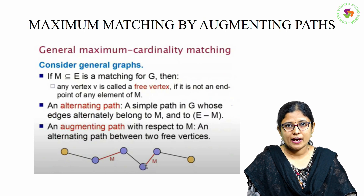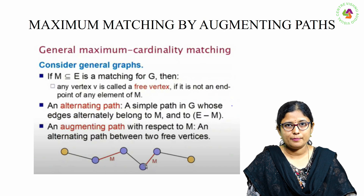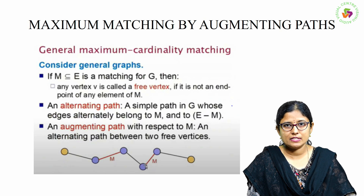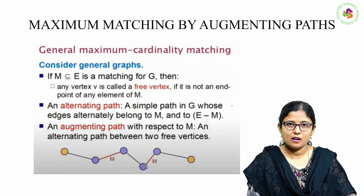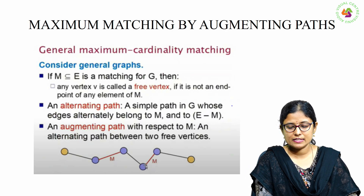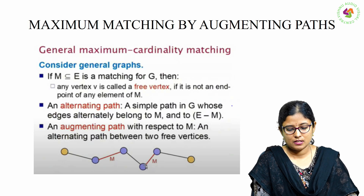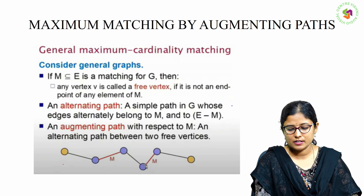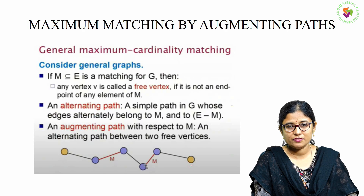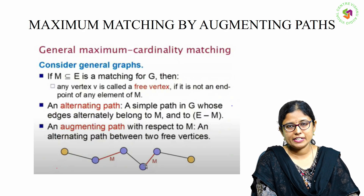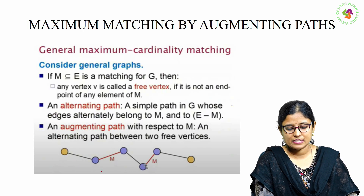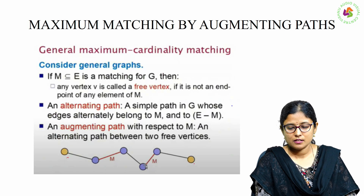First of all we have to know about what is a free vertex. A free vertex is: if M is a subset of V is a matching for G, then any vertex V is called a free vertex if it is not an endpoint of any element of M. Here, the vertices in yellow color are called the free vertices since they are not involved in any of the matching edges.